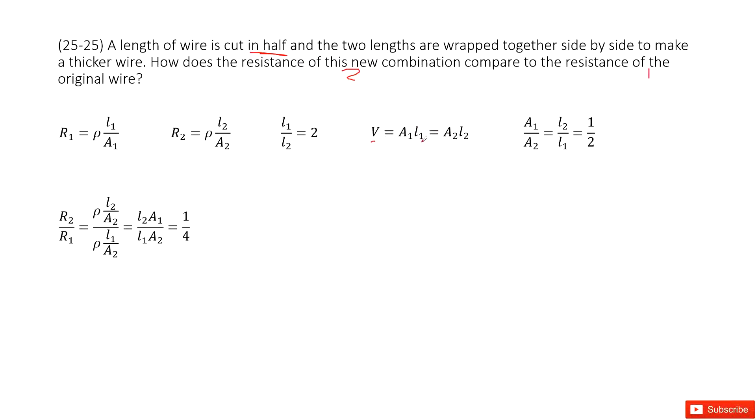From this equation, we can get the ratio for the cross-sectional areas A1 over A2. Do you agree? Yes. So from this one, we can get A1 over A2 equals to L2 over L1 from this equation. And L2 over L1 is 1 over 2. Do you agree?